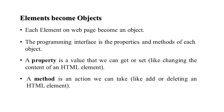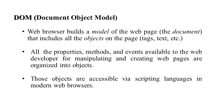The programming interface consists of the properties and methods of each object. A property is a value we can get or set, such as changing the content of HTML elements. A method is an action we can take, like deleting or adding HTML content.